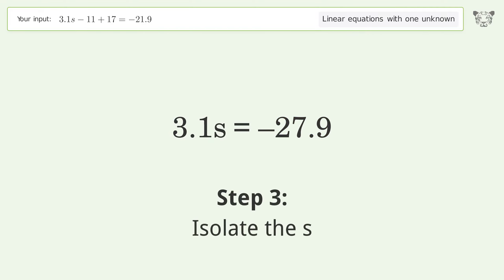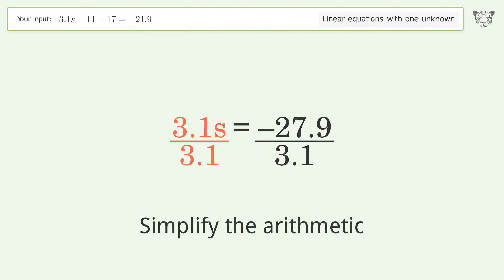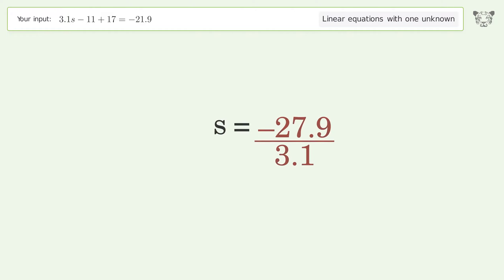Isolate the s — divide both sides by 3.1, then simplify the arithmetic. And so the final result is s equals negative 9.